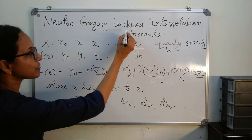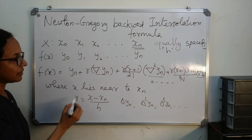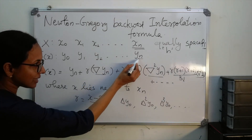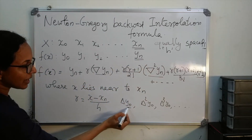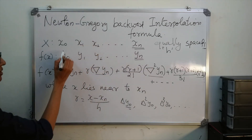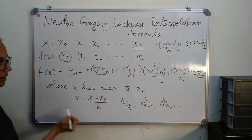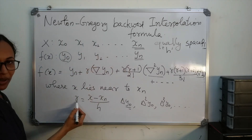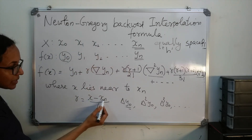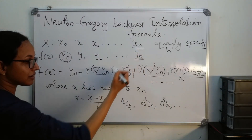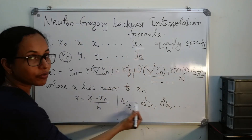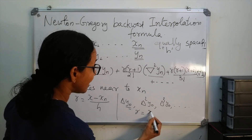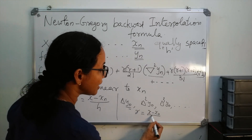But in the backward interpolation formula, we have backward delta yn — where yn is the last term — whereas in forward interpolation we had y naught as the first term. Also, in backward interpolation, r = (x minus xn)/h using the last term, while in the forward formula, r = (x minus x naught)/h.